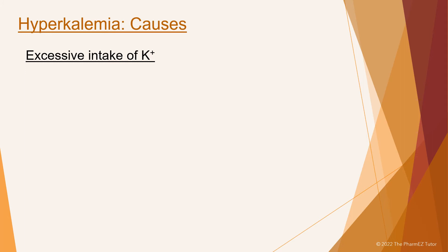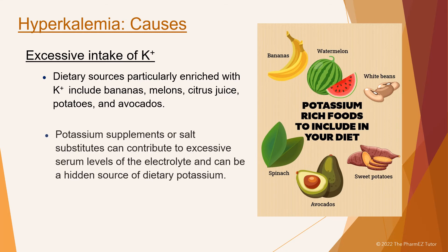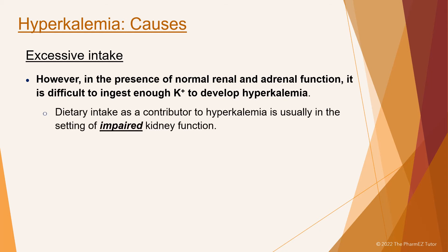Excessive intake of potassium — dietary sources particularly enriched with potassium include bananas, melons, citrus juice, potatoes, and avocados. Potassium supplements or salt substitutes can contribute to excessive serum levels and can be a hidden source of dietary potassium. However, in the presence of normal renal and adrenal function, it is difficult to ingest enough potassium to develop hyperkalemia. Dietary intake as a contributor to hyperkalemia is usually in the setting of impaired kidney function.